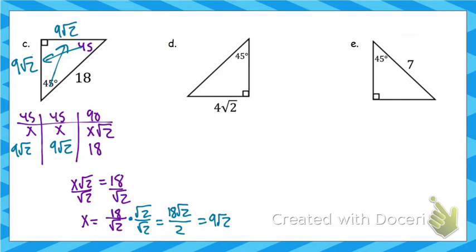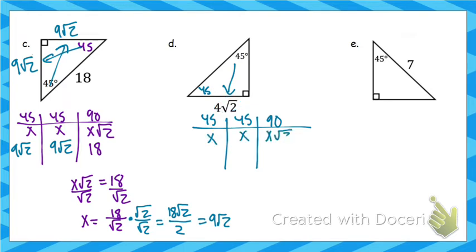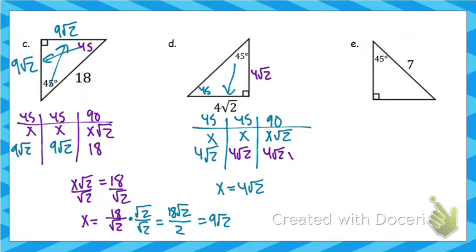Let's look at example D. This time I'm given what's across from the 45. It's easy to make a mistake here — you'll see that √2 and automatically assume x is 4, but that's not the case based on where it sits in our chart. 4√2 is across from 45, so x equals 4√2. Replacing x, the hypotenuse is 4√2 times √2, which is 4 times 2, which equals 8. Across from 90 is 8.